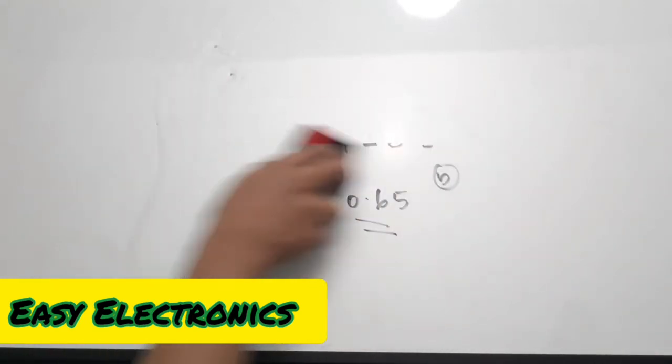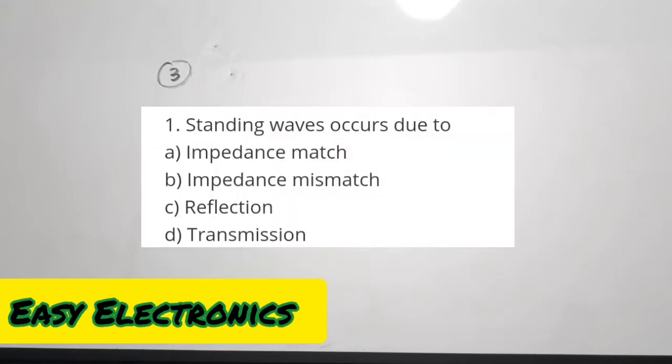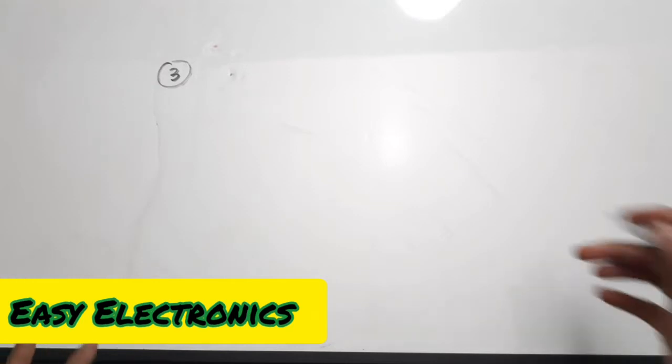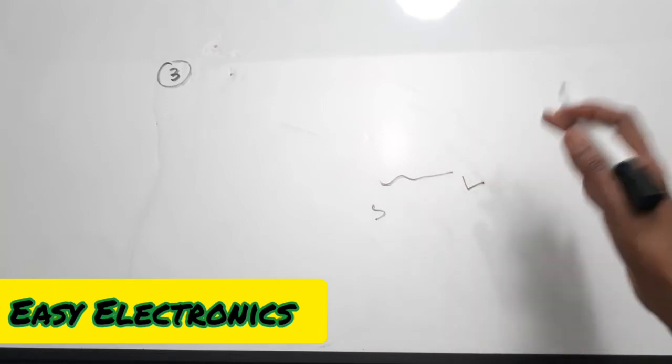In this video I have included more questions from EMT. The third question is: standing waves occur due to — A: impedance match, B: impedance mismatch, C: reflection, D: transmission. Standing waves are generally caused by reflections from the load side towards the source side. We have done a detailed video on VSWR where you can find how reflections happen and how standing waves occur. We are sending waves from the source side to the load or receiver side, and due to impedance mismatch between these two,